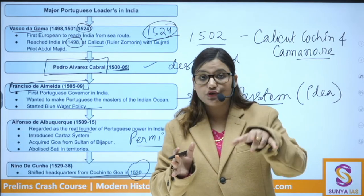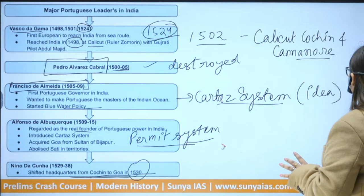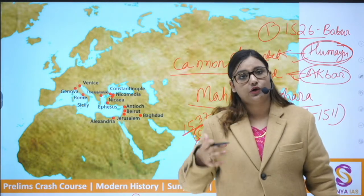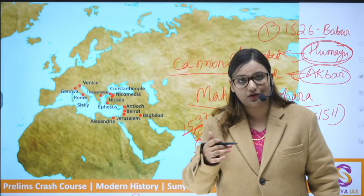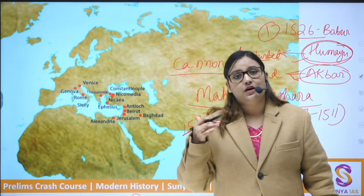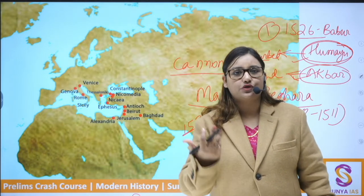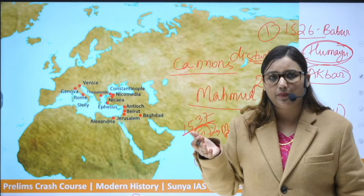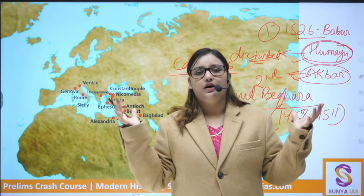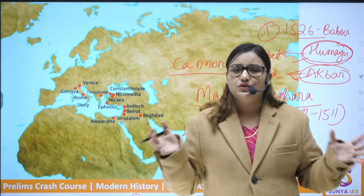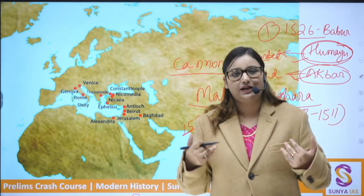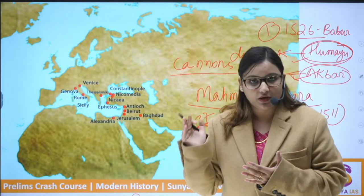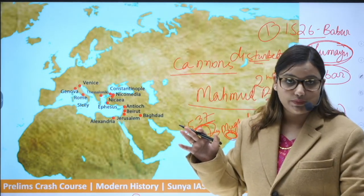Marathas recaptured Bassein and Salsette from Portuguese. By the 18th century Portuguese lost all commercial influence, with only individual private traders continuing. They could not handle the emergence of powerful dynasties in Egypt, Persia, and North India, nor the rising Maratha power. Eventually Portuguese decided to divert their colonization toward Brazil after its discovery. Spain and Portugal later unified and decided to focus more on Brazil than India, marking the complete end of Portuguese power in India.